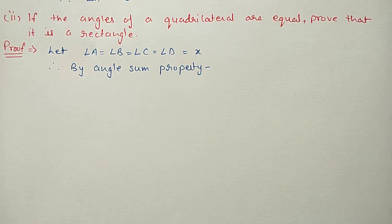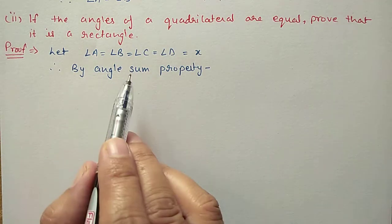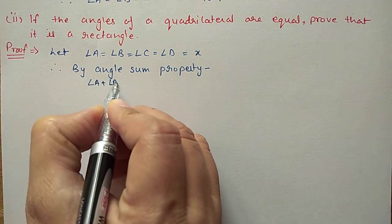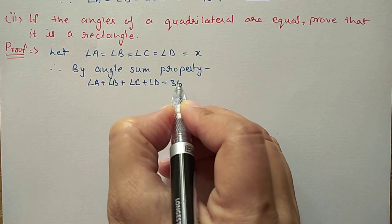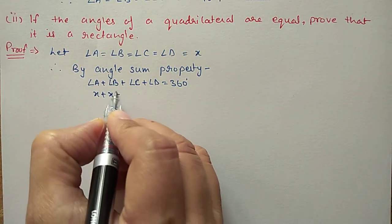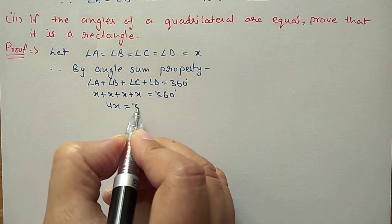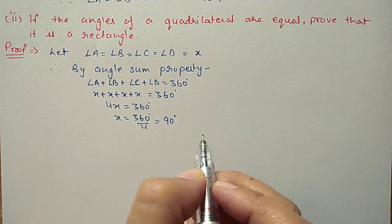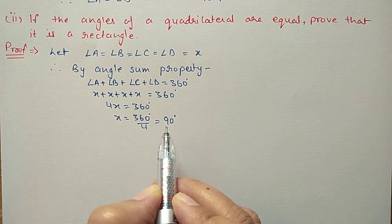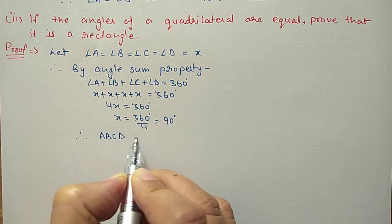Question 9 second part: If the angles of a quadrilateral are equal, prove that it is a rectangle. Let each angle equal X. By angle sum property, angle A plus angle B plus angle C plus angle D equals 360 degrees. Each angle is X, so 4X equals 360 degrees, giving X equal to 90 degrees. Since each interior angle equals 90 degrees, we can say this figure is a rectangle. Therefore ABCD is a rectangle.